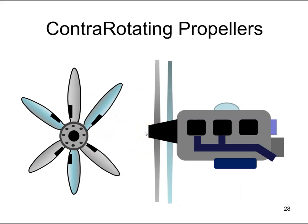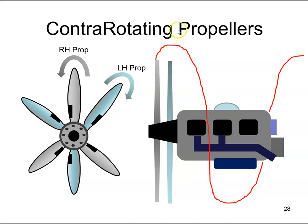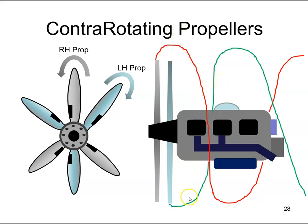Let's look at this as an example. Here we have an engine, a right-hand propeller and a left-hand propeller. Due to the rotation of the right-hand propeller, we get the slipstream effect such as this. For the rotation of the left-hand propeller, we get a slipstream effect such as that. That slipstream effect is equal and opposite to the right-hand propeller, so they will cancel each other out.